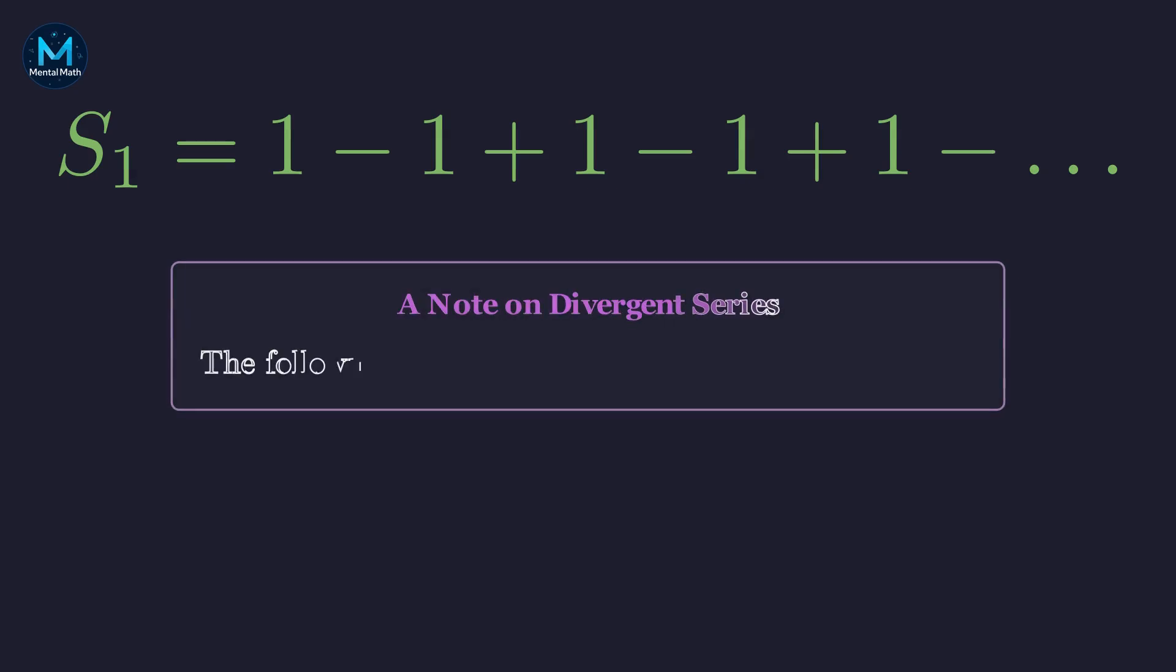A critical warning. The algebraic rules for convergent series, like rearranging terms, do not automatically apply to divergent ones. What follows are formal manipulations. The goal is to find a consistent value, which we will later justify.